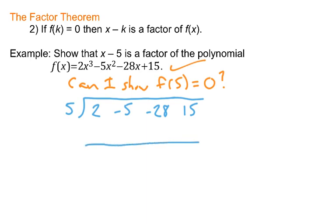Following the usual method for synthetic division, we copy the 2 down, then multiply up: 5 times 2 is 10. Multiply up, add down: negative 5 plus 10 is 5. Multiply up: 5 times 5 is 25. Multiply up, add down: negative 28 plus 25, and then 5 times negative 3 is negative 15, and you get 0.